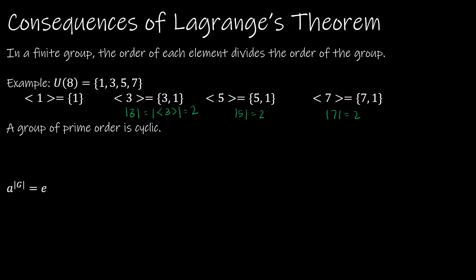Another corollary is that a to the |G| equals the identity e. If we know the order of the group, we know we can always get back to the identity. Using U8, whose order is 4: 3 to the 4th, 1 to the 4th, 5 to the 4th, and 7 to the 4th all return to the identity.